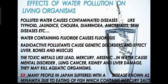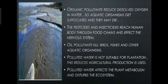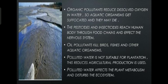These toxic metals may kill aquatic organisms. Many people in Japan suffered with a disease known as Minamata disease due to eating fish which contained mercury salts. Organic pollutants reduce dissolved oxygen in water, so aquatic organisms get suffocated and may die. Pesticides and insecticides reach the human body through food chains and affect the nervous system.